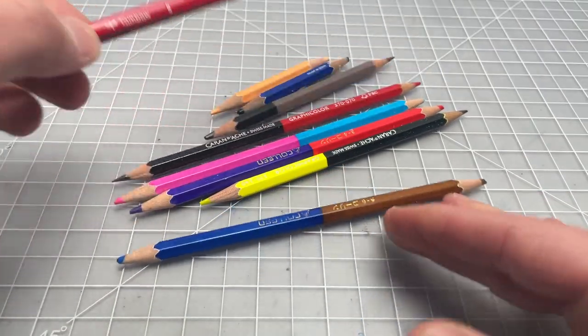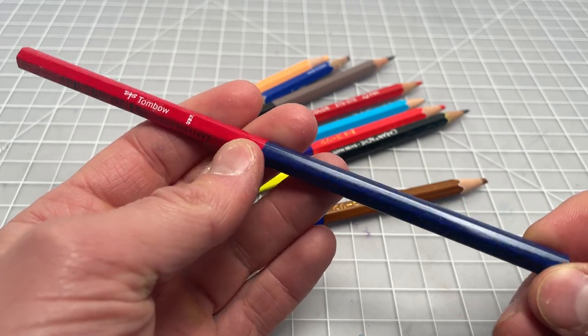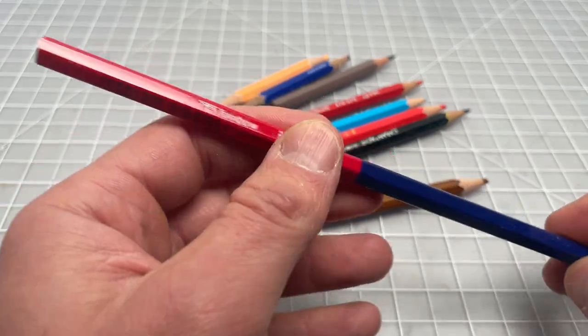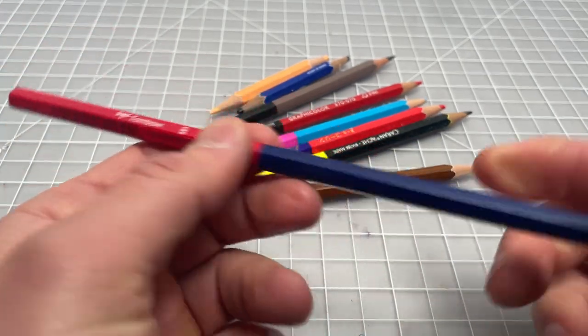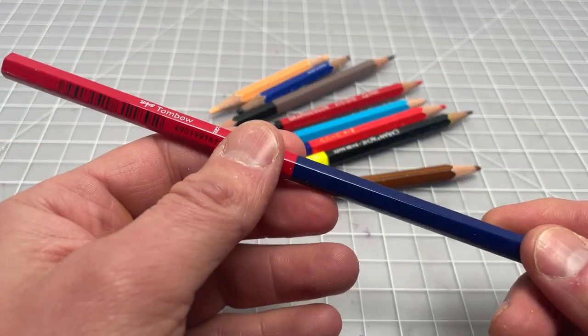There's no eraser or ferrule on one side because they're dual-ended. And here's a good example of one from Tombow. Basically it's a wooden pencil flat on both sides. On one side it's red, on the other side it's blue. Pretty simple, you could sharpen it on both sides.